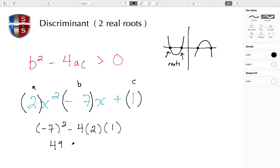We're going to have a minus sign here because negative times positive times positive remains negative. So 4 times 2 is 8, and 8 times 1 is 8. We end up with 49 minus 8, which resolves down to 41. And we know that 41 is greater than zero.